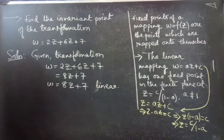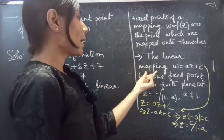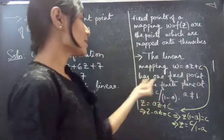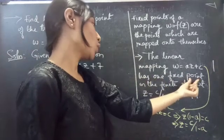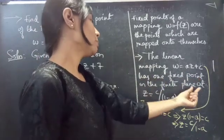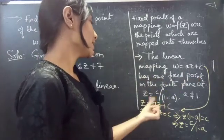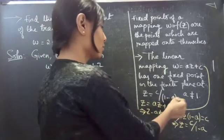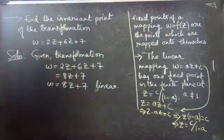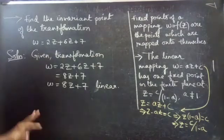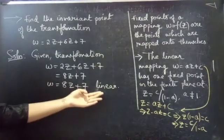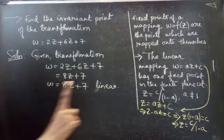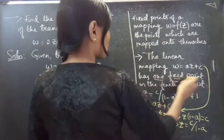The linear mapping W equals AZ plus C has one fixed point in the finite plane at Z equals C divided by 1 minus A, for A not equal to 1. Simply, for a linear transformation we will get only one fixed point.